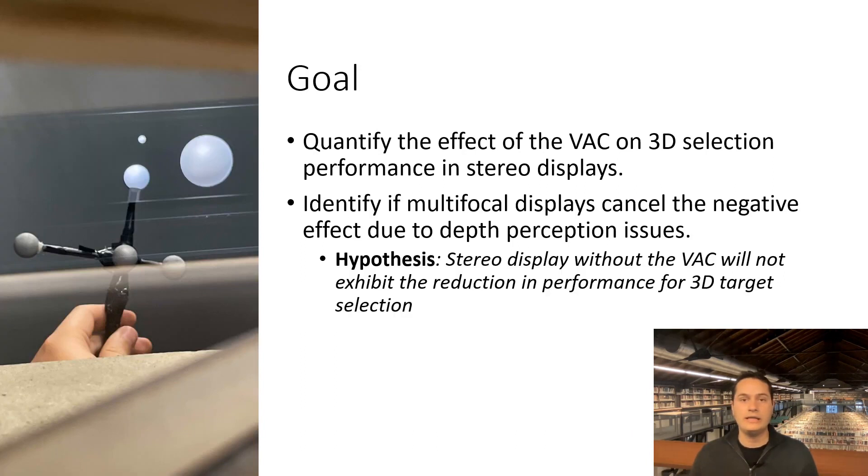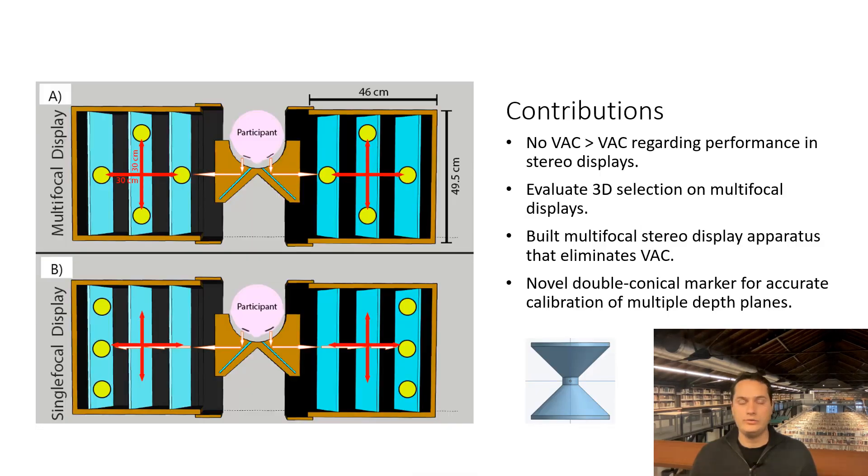The goal of our work is to quantify the effect of the vergence-accommodation conflict on 3D selection performance in stereo displays. We aim to identify if multifocal displays cancel the negative effect of depth perception issues that affect interaction in single focal displays. Our contributions are: we evaluated virtual 3D target selection within arm's reach, we identified that vergence-accommodation conflict significantly affects 3D selection performance for targets at different visual depths, and we described the first virtual hand selection study involving a multifocal stereo display. Our results confirm that virtual hand selection with multifocal displays improves user performance compared to single-focal displays.